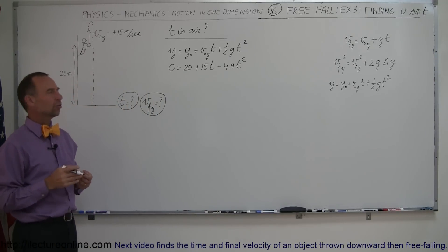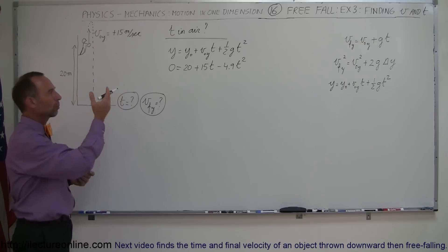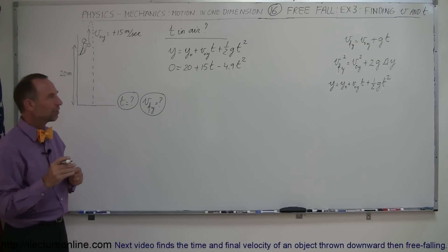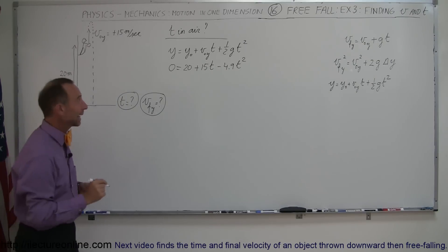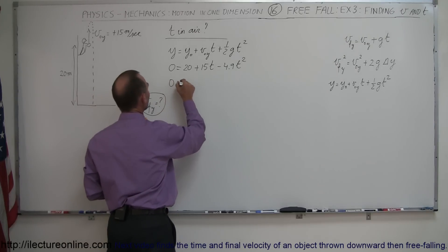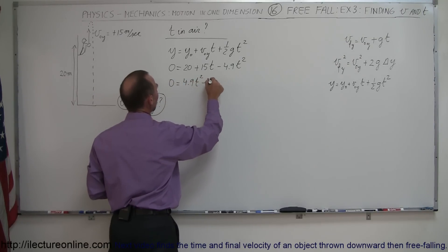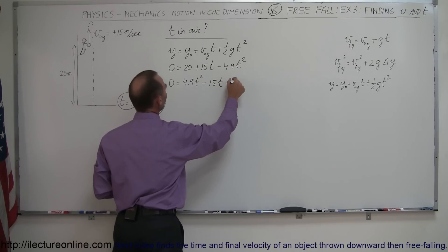Now to solve quadratic equations we like to have the squared term come first and we like that to be a positive quantity so I'm going to multiply both sides of the equation by negative 1. So we get 0 equals a positive 4.9 t squared, a minus 15t and a minus 20.